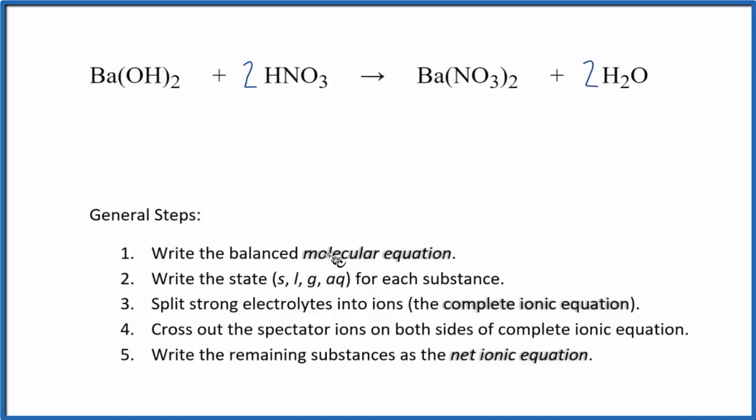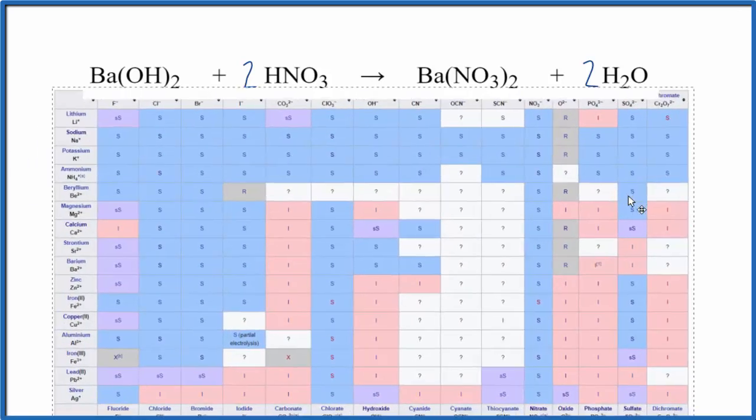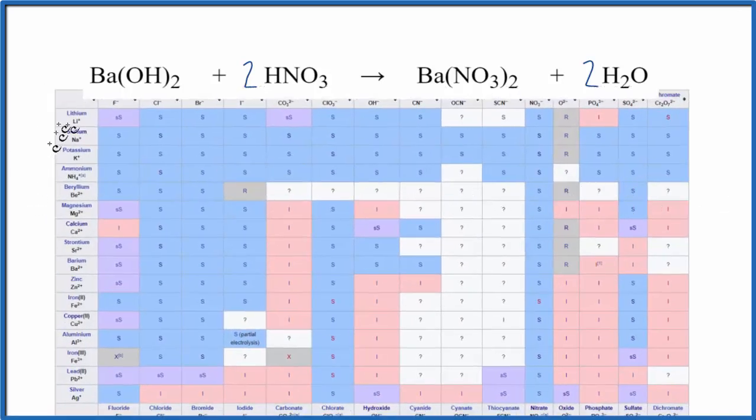Now we can write the states for each substance. For barium hydroxide, hydroxides are often not soluble with some exceptions. I think barium is an exception, but I can check that on this solubility table. So as I find barium right here, I go across, let's see, hydroxide, where's the hydroxide? Right here. So I go across, and it is soluble. So this is going to dissolve in water, and I'm going to write AQ, aqueous or dissolved in water.